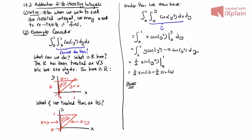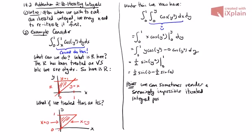...is that sometimes we can make a seemingly impossible integral possible by changing the way that we've iterated it. Now, again, this is very rare, but we can sometimes render a seemingly impossible iterated integral possible by changing between vertically simple, horizontally simple, or even polar. So I'll do one more example that will demonstrate the polar point. Before doing so, I'm going to erase the entire screen so we can start with a brand new example. Take a look, make sure all this makes sense before going forward.